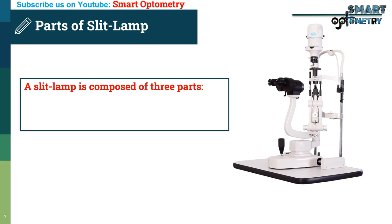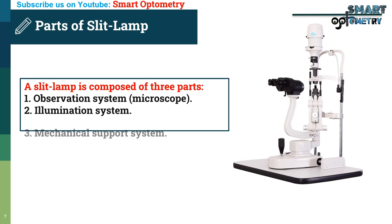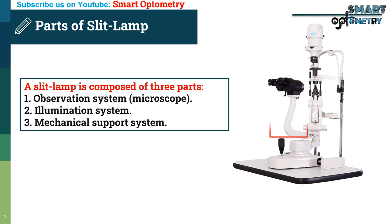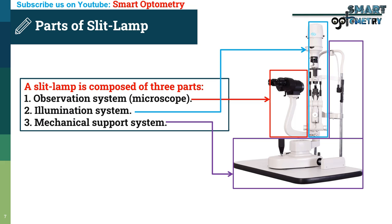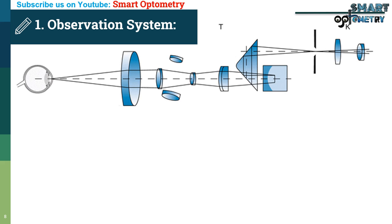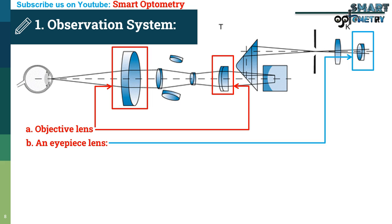Parts of Slit Lamp: A slit lamp is composed of three basic parts: one, the observation system; two, the illumination system; and three, the mechanical support system. As shown in the figure, the observation system is the microscope, this is the illumination system, and this is the mechanical support system.